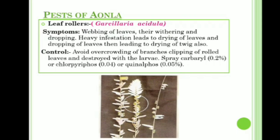The next pest is leaf roller (Gracilaria acidula). Symptoms: webbing of leaves, withering and dropping; heavy infestation leads to drying of leaves and twigs. Control: avoid overcrowding of branches, clip rolled leaves and destroy with larvae. Spray Carbaryl 0.2 percent or Chlorpyrifos 0.04 percent or Quinalphos 0.05 percent.